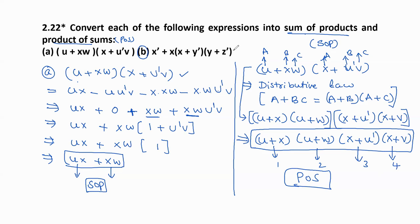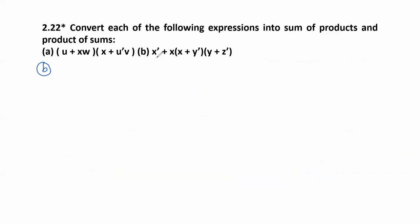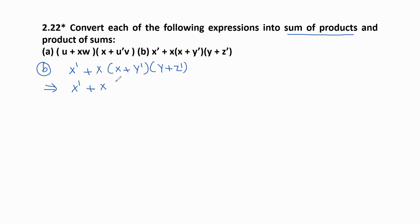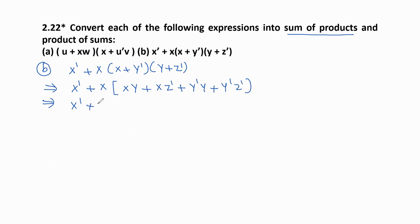In the same way we solve part B. The expression is (x' plus x)(x plus y')(y plus z'). To find the SOP form, we first multiply the brackets: x' as it is, then multiply the two brackets giving x·y plus x·z'. Then multiplying with x and with y' in the second bracket gives y'·y plus y'·z'.